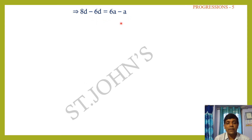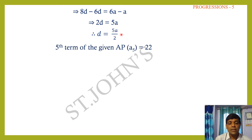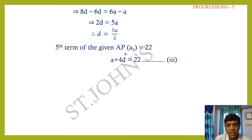Find the 54th term: a₅₄ = a + 53d = 3 + 53×12 = 3 + 636 = 639. So the 54th term is 639.